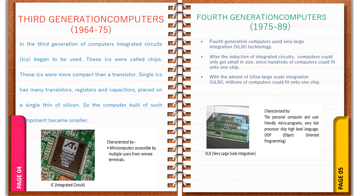In the third generation of computers, integrated circuits (ICs) were used instead of vacuum tubes and transistors. The size of these computers was smaller than earlier computers. These ICs were called chips and were more compact than transistors. A single IC had many transistors, registers, and capacitors placed on a single silicon chip, so the computers built of such components became smaller. Magnetic disks were used for external storage, and storage space was much more than earlier computers. They consumed less power than second generation computers, though air conditioning was still required. They were more reliable, less prone to errors, and had higher processing speed. Monitors and keyboards were used for input and output. High level languages like Pascal and BASIC were developed.